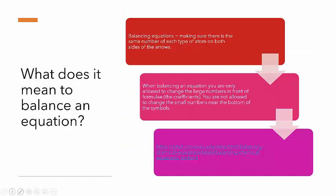What does it actually mean to balance a chemical equation? It means that we've got the same number and type of atoms on both sides of the equation. There's a really important rule that we've got to follow: we're not allowed to change any of the small numbers that are part of the chemical formulae. The only numbers that we can change are the large numbers — the coefficients — in front of the chemical formulae.